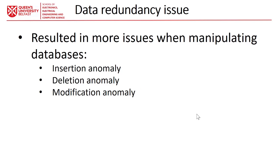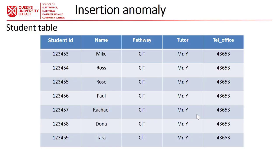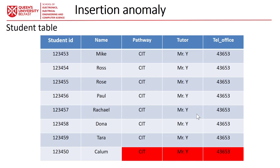Unnecessary data repetition increases the size of the database, specifically for large databases, and results in more issues when manipulating data. These issues include insertion anomaly, deletion, and modification — all database manipulation anomalies. Let's look at that table. We have this student table and we're going to see what the insertion anomaly is. If you have 100 students and you're going to insert all of their information, you have to repeat all of these attributes. You have to perform this unnecessary action of inserting all this data for, say, 500 students. This is called the insertion problem or insertion anomaly.